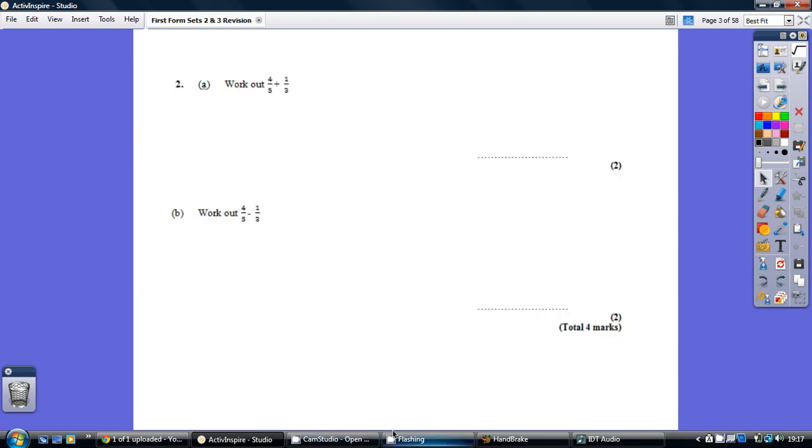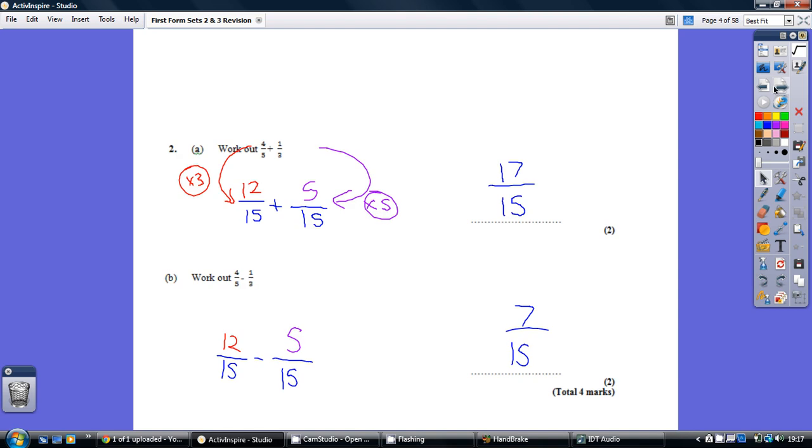Question 2, have a go. I'm doing both of these together because it's a very similar process. To be able to add or take away fractions, we've got to have a common denominator. That means the same number on the bottom. Best way to find a common denominator is just to times the two numbers on the bottom together. So 5 times 3 is 15. So we've got 15 on the bottom for both of these.